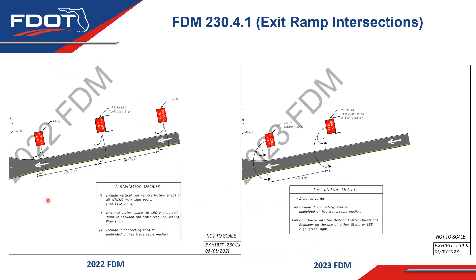Now let's look at the exhibits associated with this language. With the first exhibit, we have the 2022 FDM exhibit and we have the 2023 FDM exhibit. On the 2022 exhibit, there are three sets of wrong way signs shown — two static sets and one highlighted set. The intent was to have the minimum MUTCD required one set of static signs and the MUTCD optional second set of static signs. If the LED highlighted signs were used, they would be placed between the two sets of static signs, so the second set would be pushed back another 200 feet.